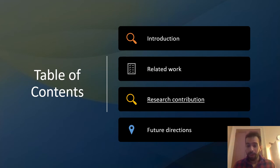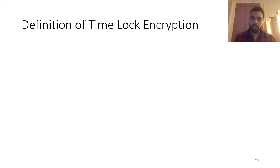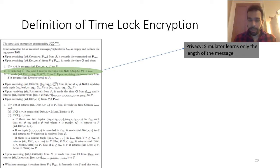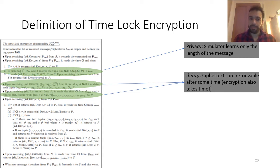In the third part of my talk, I'm going to speak about our research contribution. We define in the universal composability framework the concept of time-lock encryption using an ideal functionality, specifically F_TLE. We capture certain security properties. The first is privacy: the simulator doesn't learn anything about the message, but only learns the length of the message. Second, we capture the asymmetry between puzzle creation and puzzle solution because encryption also takes some time. We manage to capture it by parameterizing our ideal functionality with the function 'delay', so if delay is zero, encryption takes zero rounds; if it's one, it takes one round.